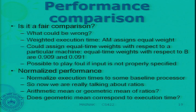The other option is to report normalized performance, and that is normally what industry and practitioners do. You normalize execution times to some baseline processor. The point is that when you are designing a new processor, you already have one and you are trying to improve upon that. So it makes sense to specify your performance improvements relative to the current processor, which we call the baseline processor.